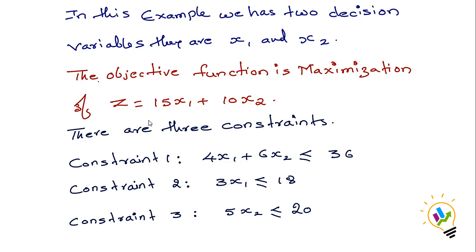There are three constraints. The first constraint is 4X1 plus 6X2 which is less than or equal to 36. The second constraint is 3X1 less than or equal to 18. The third constraint is 5X2 less than or equal to 20.